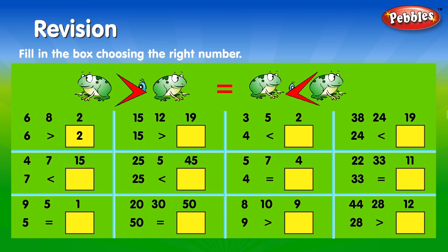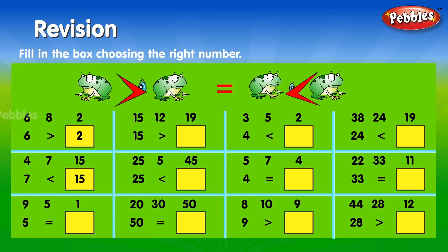4, 7, 15. 7 is less than 15. 9, 5, 1. 5 is equal to 5.